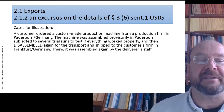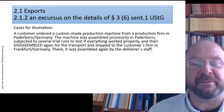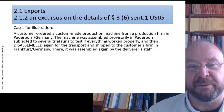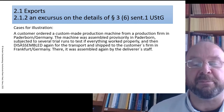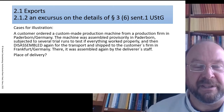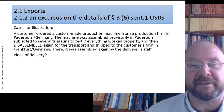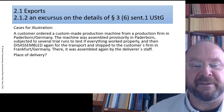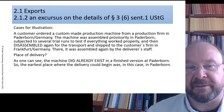Another case: a customer orders a custom-made production machine from a firm in Paderborn, Germany. The machine was assembled provisionally in Paderborn to test that everything was okay, then it had to be transported. As it was a very large machine, it had to be disassembled again for transport and shipped to the customer's address in Frankfurt. There it was reassembled by the deliverer's staff. Where is the place of delivery?